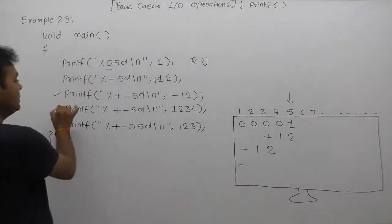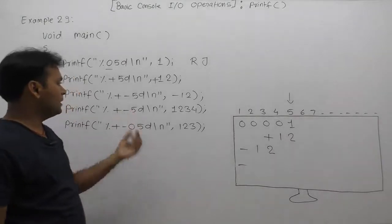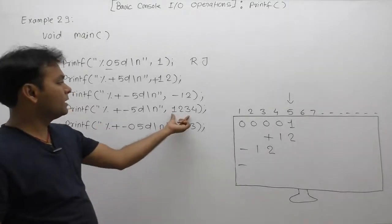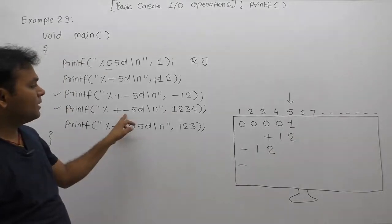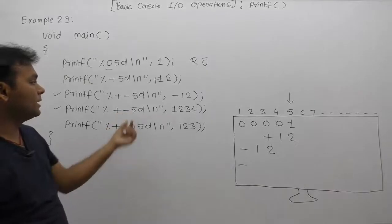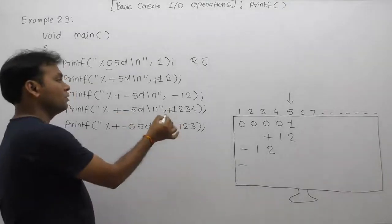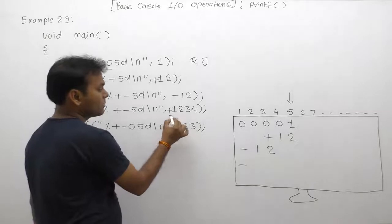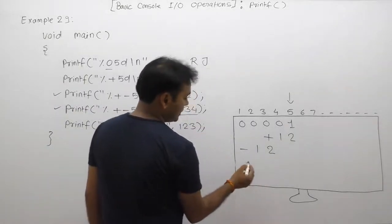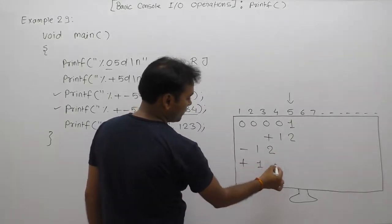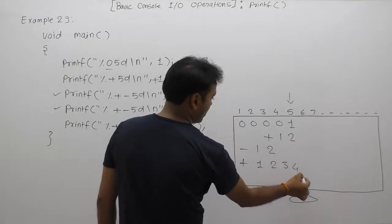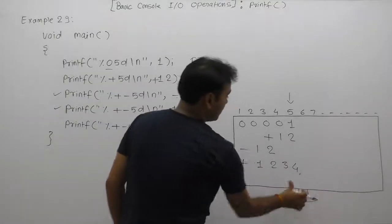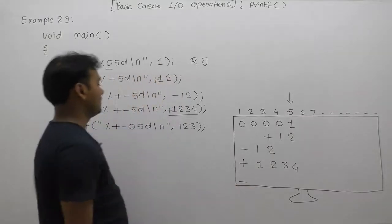Next, using the next printf, we are using plus as well as minus and a width of 5. This is almost similar to the previous case, but here we are supplying a different number — a positive number. The default justification is left to right according to minus. According to plus, the sign is also displayed, so the output is +1234. The total width is 5, so the total number of displayed digits or symbols is 5. Therefore, it is displayed exactly as +1234, and the cursor shifts to the beginning of the next line.